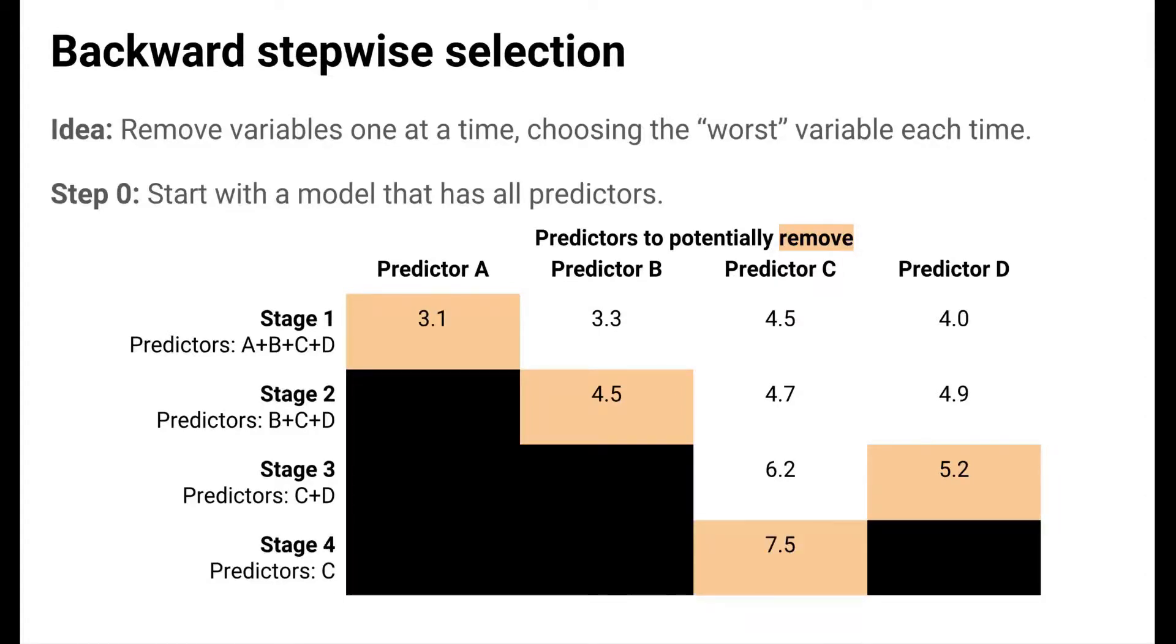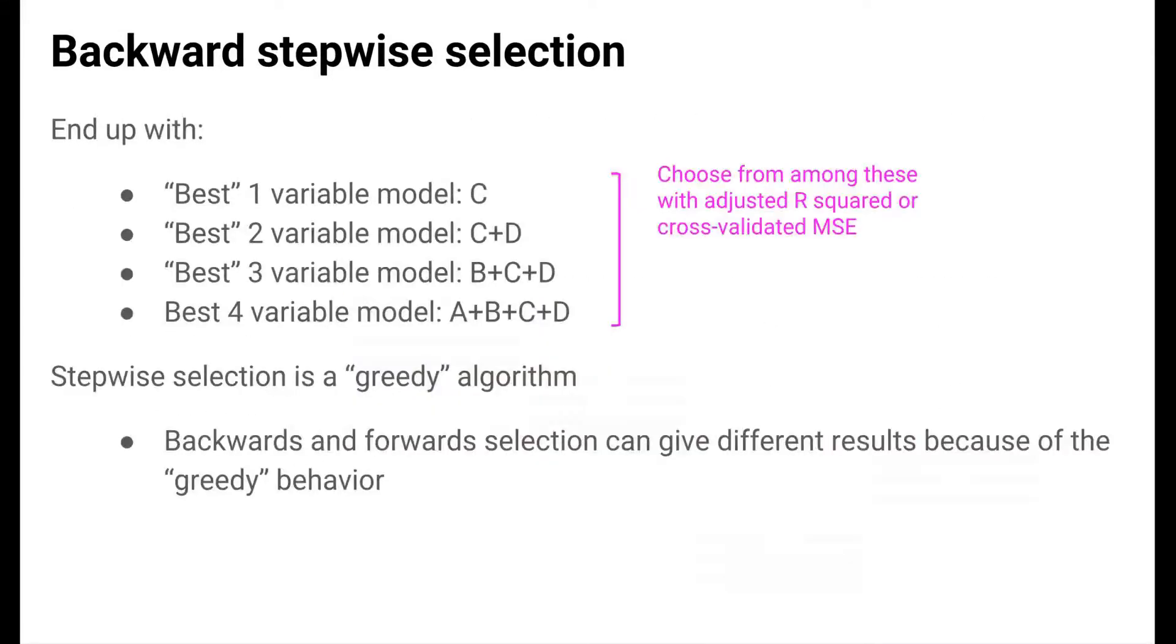And in the last stage we remove D, and we're left with the single one variable model, C. As with forward stepwise selection, we end up with four models that we can choose from with either adjusted R-squared or cross-validated mean squared error. Note that backwards and forward stepwise selection can give different results because of the greedy behavior. Not all possible models are tried and it's possible for forward and backward to look at different subsets of models and thus to give different results.